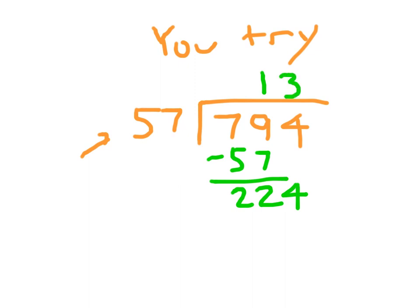I would try 3. 3 times 57: 3 times 7 is 21, regroup the 2. 3 times 5 is 15, plus 2, which is 17. I subtract those two numbers. 4 minus 1 is 3, and 22 minus 17 is 5. So I have 53.